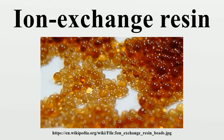An ion exchange resin or ion exchange polymer is an insoluble matrix, normally in the form of small beads, usually white or yellowish, fabricated from an organic polymer substrate. The beads are typically porous, providing a high surface area. The trapping of ions occurs with the accompanying releasing of other ions, thus the process is called ion exchange.